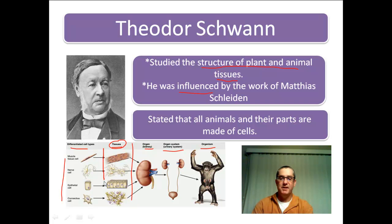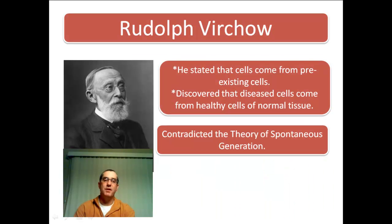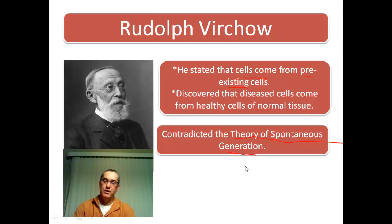From his work, Schwann stated that all animals and their parts are made up of cells — a very important contribution to the cell theory. The last scientist we'll discuss is Rudolf Virchow, who stated through his work that all cells come from pre-existing cells. This was different from what many people believed at the time, since many believed in spontaneous generation — the idea that living things came from non-living matter. Virchow disproved that theory on a cellular level.